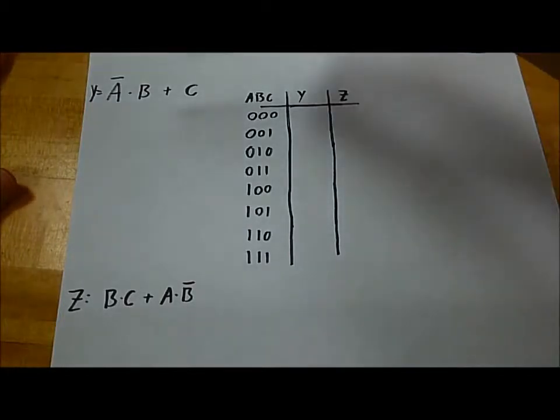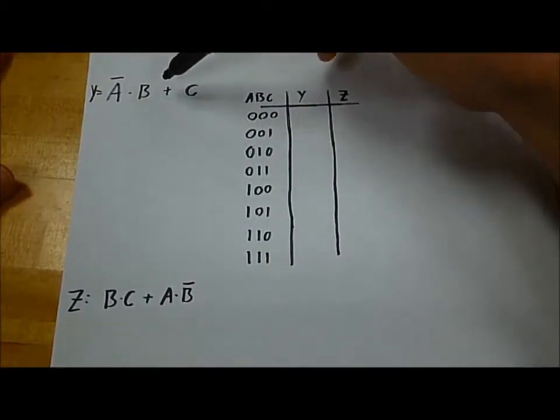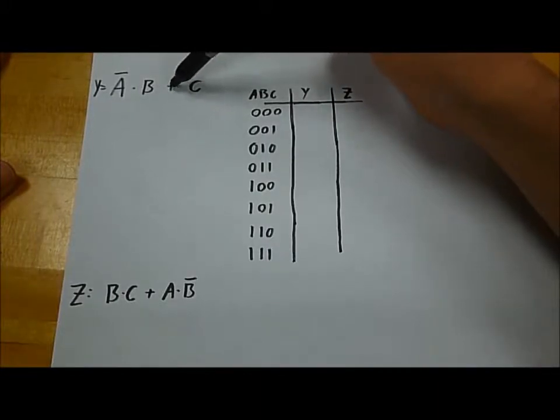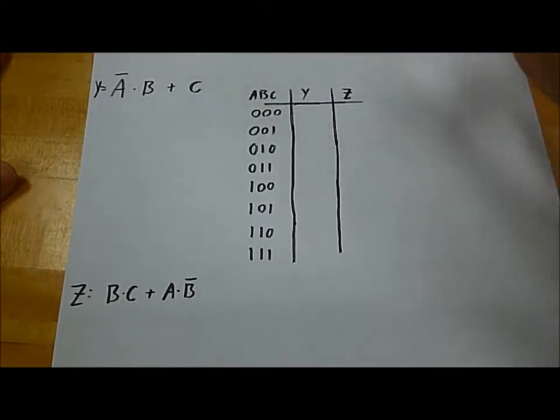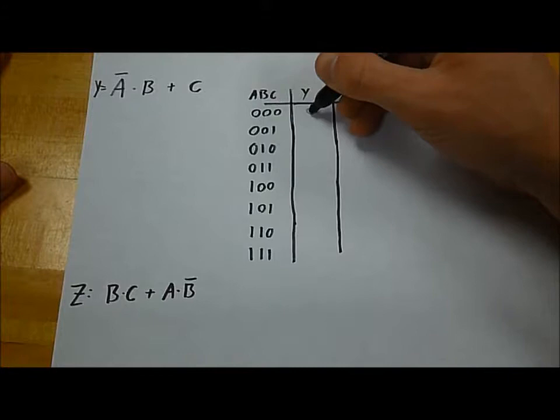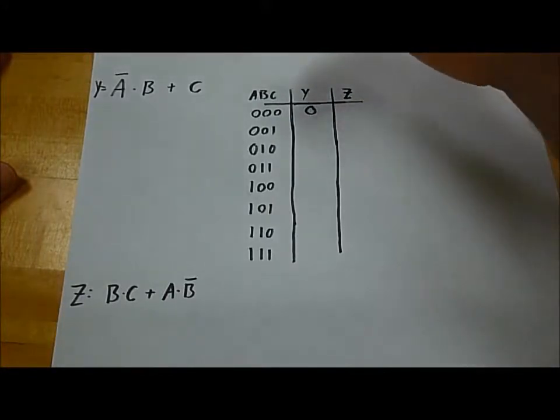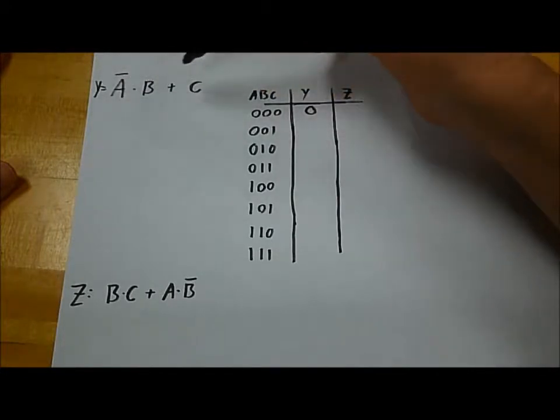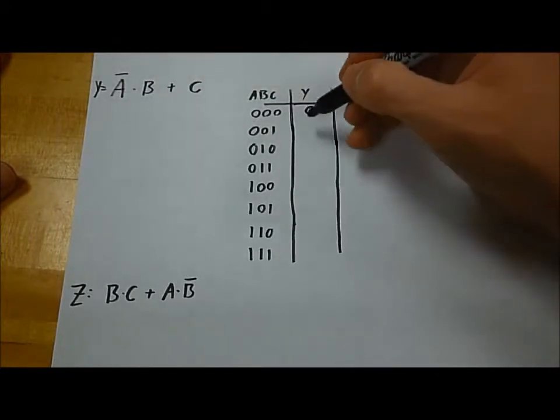For Ā·B + C: one, because Ā and 0 is 0, OR C. C is 0, so the answer is 0. In this one, the next one, 0, 0, 1, it's the same on the left part, but C is a 1, so we have a 1.